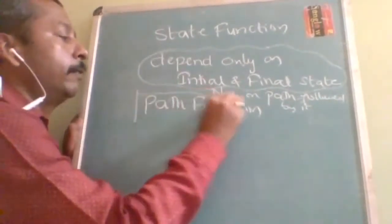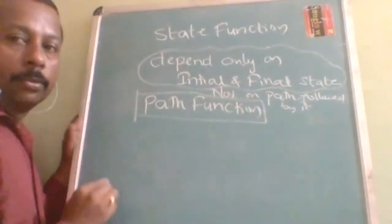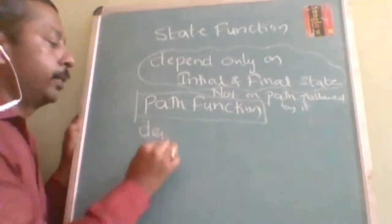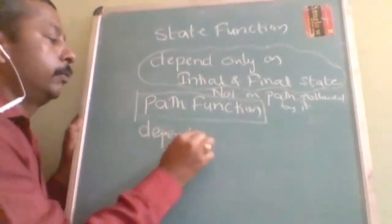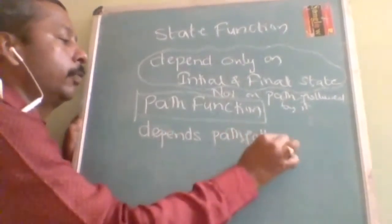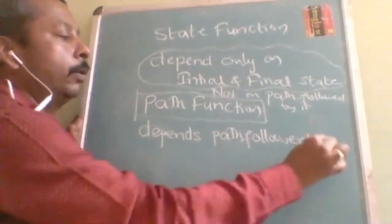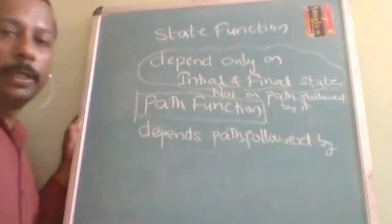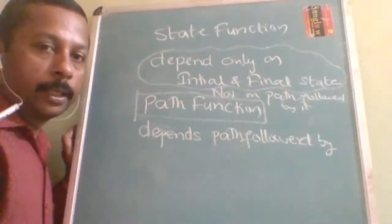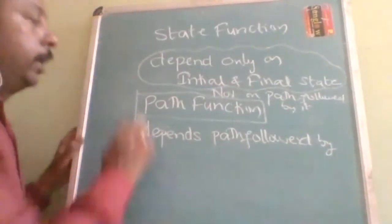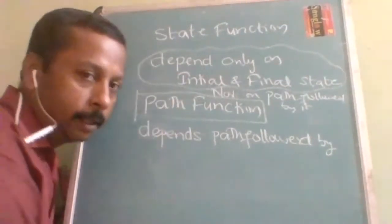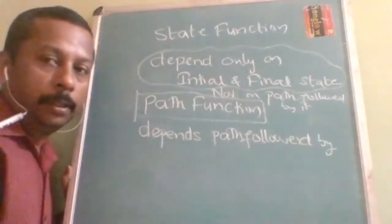A path function, on the other hand, is affected by the path followed. The function which depends on the path followed by a system to reach a final state from an initial state is called a path function. So it depends upon the path, whereas a state function depends only on the initial and final state.